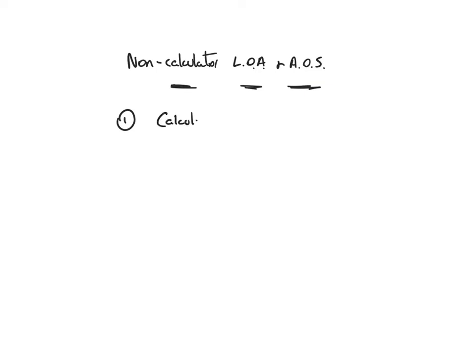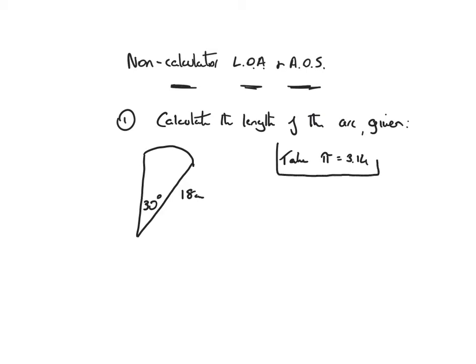Example one will be to calculate the length of the arc given. So I'm told that that's 30 degrees and I'm also told that the radius is 18 centimeters. Now crucially the question often will tell you to take pi to be equal to 3.14.